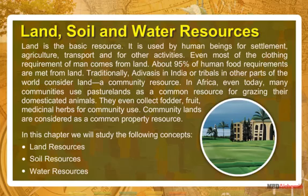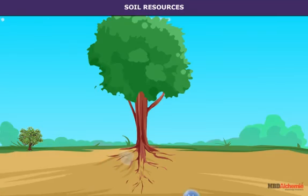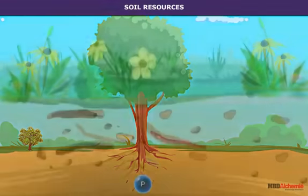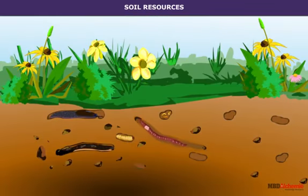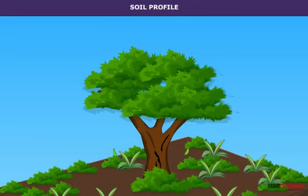In this chapter, we will study the following concepts: land resources, soil resources, and water resources. Soil is the most important resource which sustains the living world. It is the topmost surface layer of the earth, comprising mineral particles and decayed organic material which together help plant growth. The organic content in soil is known as humus.